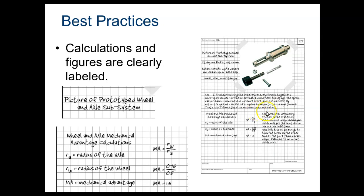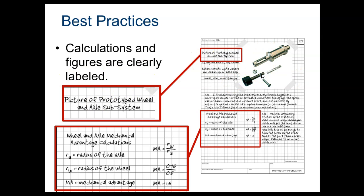If you have to do any calculations, make sure that you are writing clearly and everything is labeled. So right here, this says picture of a prototype of a wheel and axle system. That is very straightforward. That's easy to understand. And this is talking about some of the calculations that they need to do for this particular design.